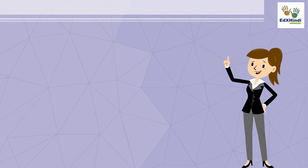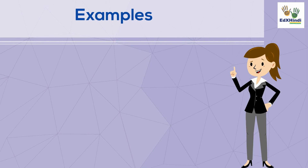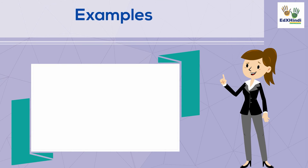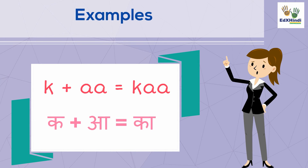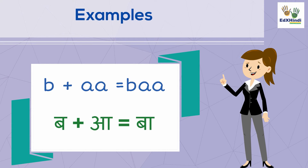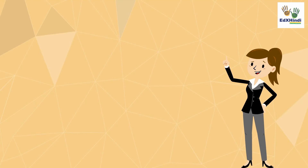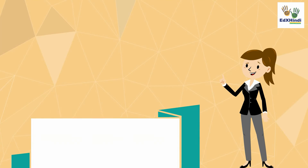Let's look at some examples of blending ah with consonants: k + aa = ka, b + aa = ba, n + aa = na.